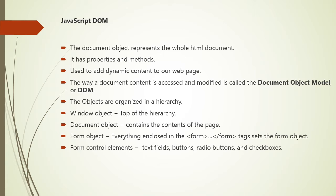Consider the JavaScript document object. The document object represents the whole HTML document. When an HTML document is loaded in the browser, it becomes a document object — it is the root element representing the HTML document. It has properties and methods. By the help of the document object, we can add dynamic content to our web page. The way document content is accessed and modified is called the Document Object Model, that is DOM. The objects are organized in a hierarchy which applies to the organization of objects in a web document.